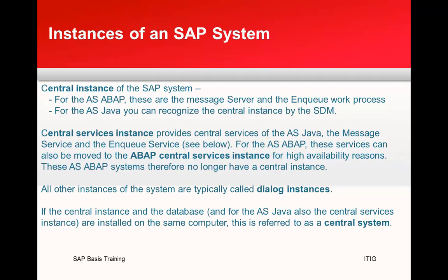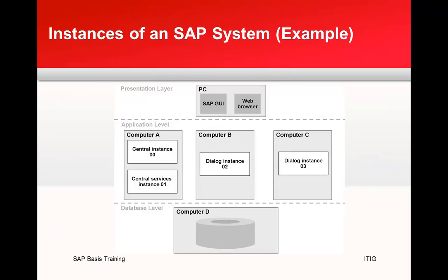For the AS ABAP, these services are moved to the ABAP central services instance for high availability reasons, so ABAP systems no longer have a central instance in the traditional sense. All other instances are typically called dialog instances. This distributed architecture supports scalability, performance, and high availability.